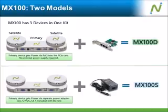MX100 comes in two models: direct and standard. The two models differ in the way they connect to the host computer. The direct model, MX100D, comes bundled with a PCI Express card. No external power is required as the access devices get power over Ethernet. It is an enhanced version of the company's highly successful X-series. The standard model, MX100S, comes with an external power adapter and connects to the host or a network switch. This is a big improvement over the company's M-series, which has been successfully deployed in thousands of locations.